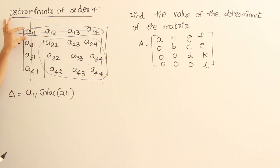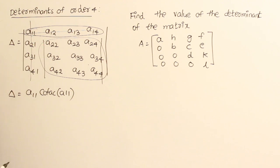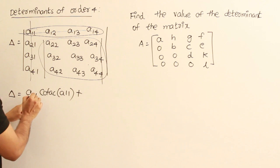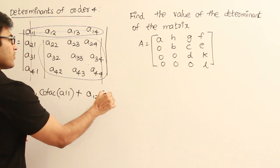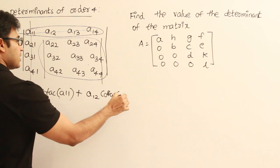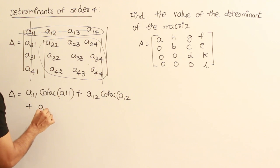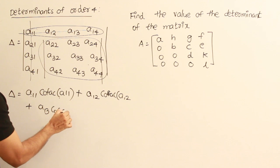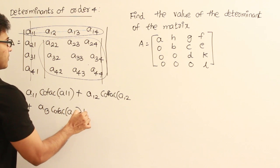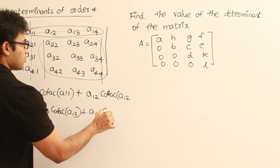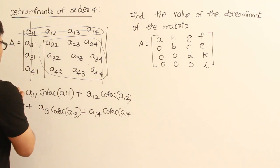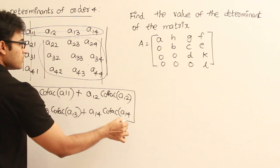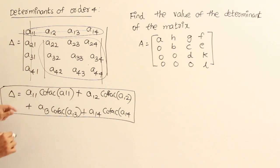Take each element of a chosen row, multiply it with its cofactor, and then add them all up: A11 into cofactor of A11, plus A12 into cofactor of A12, plus A13 into cofactor of A13, plus A14 into cofactor of A14. This entire sum gives the determinant of order 4.